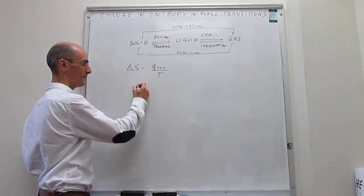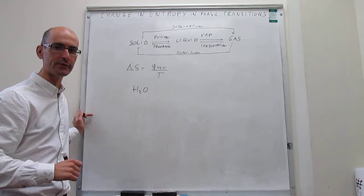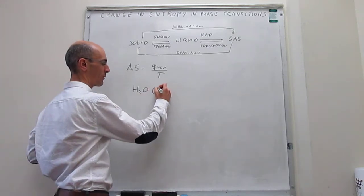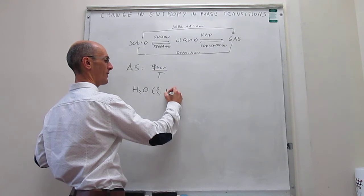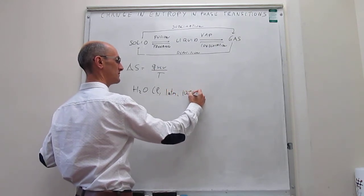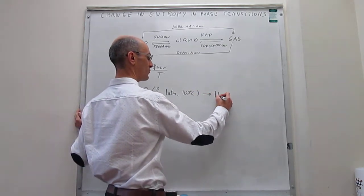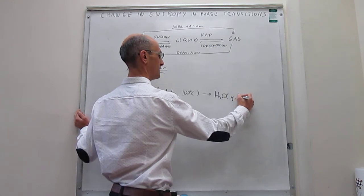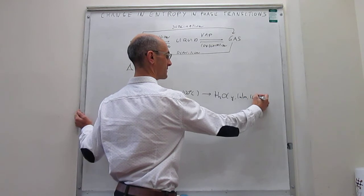So one of the benchmark phase transitions would be the vaporization of liquid water into the gas. We have liquid water at one atmosphere of pressure and 100 Celsius, and then that would turn into the gas at the same pressure, one atmosphere, and at the same temperature, 100 Celsius.